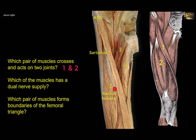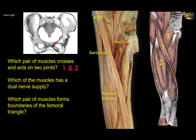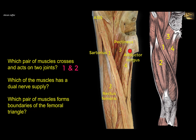Both one and two act on the hip and knee. The pectineus arises from the pectineal line of the pubis, just medial to the pubic tubercle, and only acts on the hip joint because it's attached to the femur. The adductor longus is attached to the body of the pubis and then the linea aspera of the femur, and only acts on the hip joint — it's an adductor of the hip. So only one and two is the pair of muscles that crosses and acts on two joints.